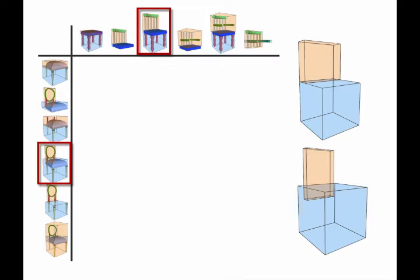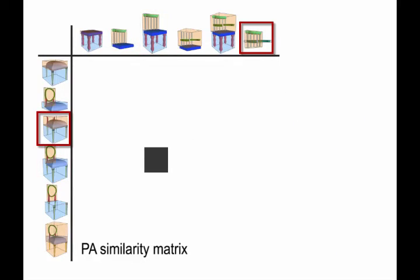Similar arrangements, or more specifically, similar configurations of boxes, will have high similarity, and this is encoded in a PA similarity matrix.